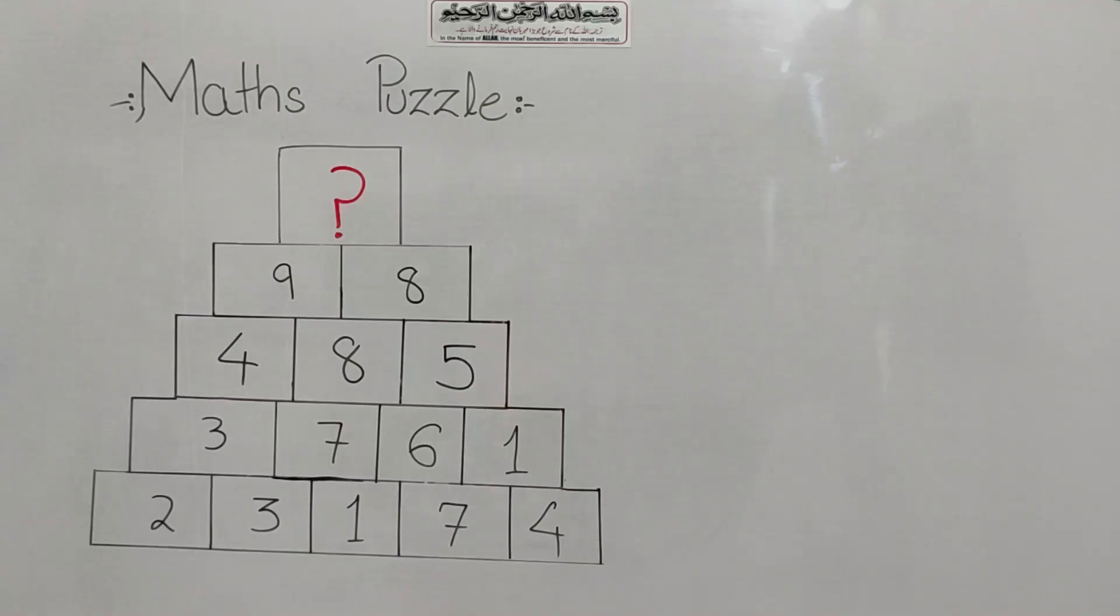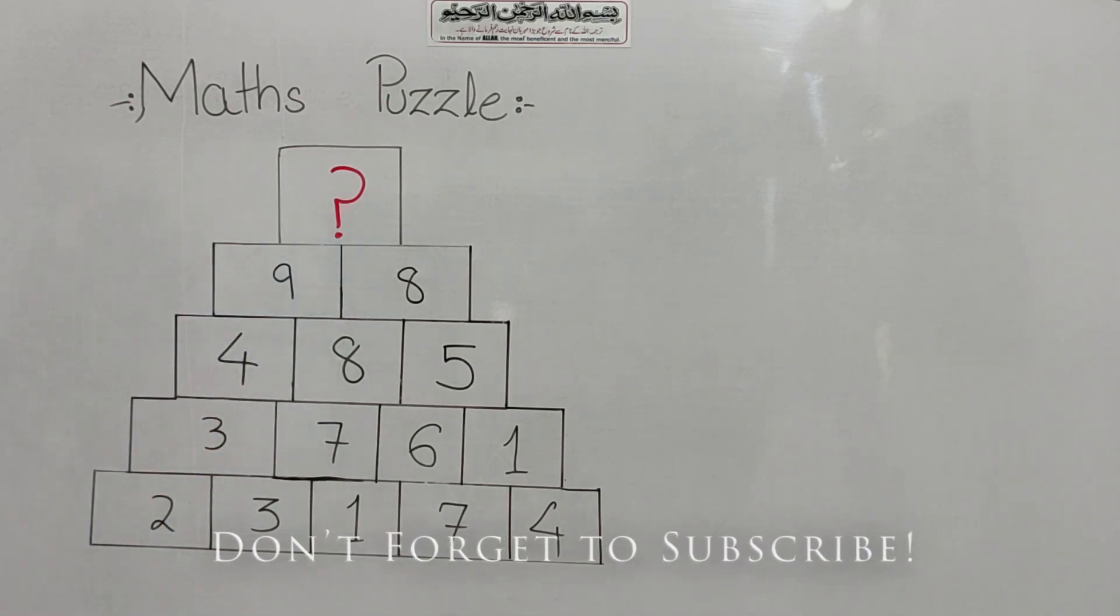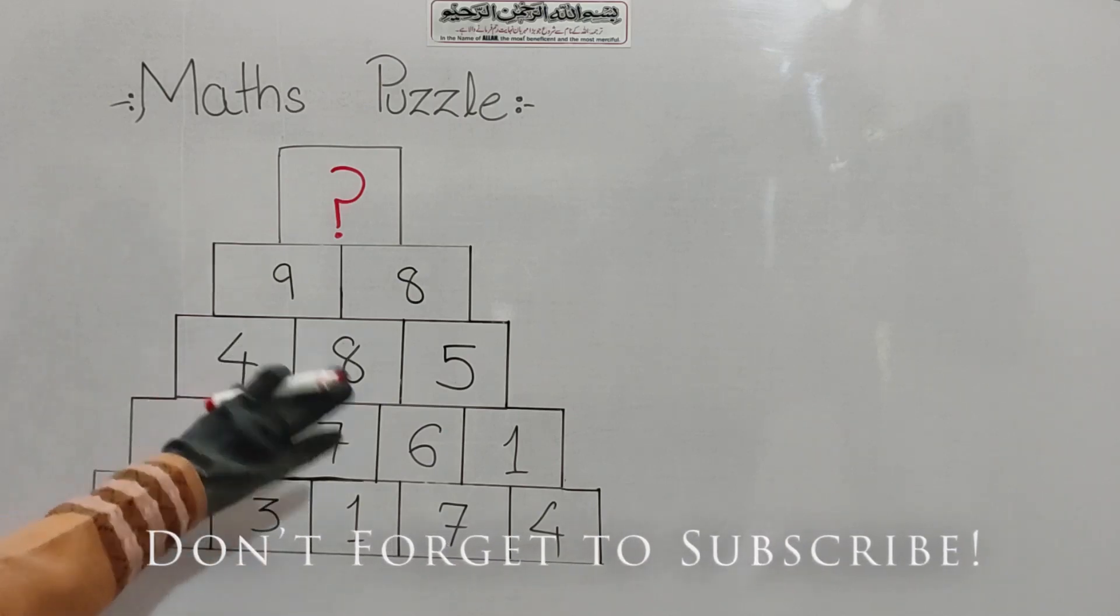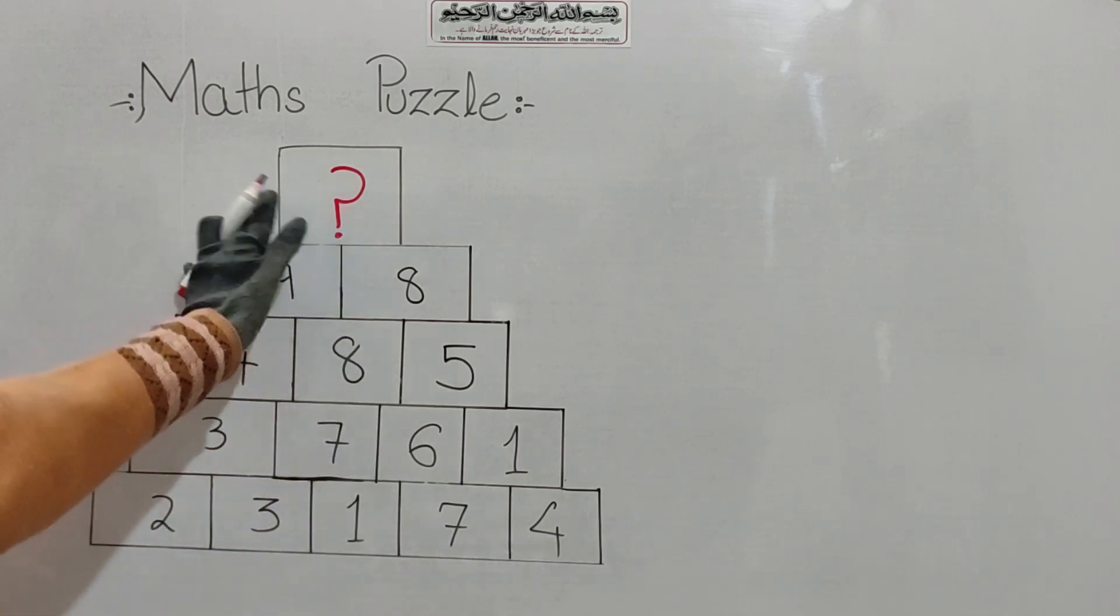In the name of Allah, welcome. How are your students? I hope that you will be with all of them. Today's Maths Puzzle is written on the board. There are blocks and there are some values here, but there is a question mark. So, how can we find out this question mark? What is the logic here? The rest of the numbers are 1 to 10, but there is a question mark.